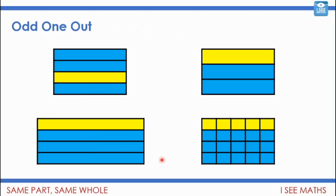Have a look at these four shapes. Can you come up with a reason why each shape could be the odd one out? And can you think about which fraction is the odd one out? Why can each shape be the odd one out, but actually only one of the fractions is the odd one out? Pause the video and see if you can work out which one.